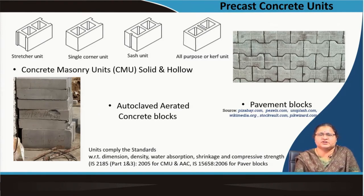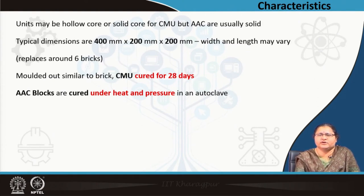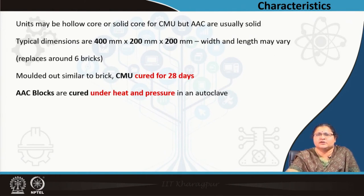Other than hollow blocks, concrete masonry units come as solid blocks also, used for load-bearing structures. The typical dimension is 400 mm × 200 mm × 200 mm, replacing almost 6 bricks. You can also have 600 mm in length, or 75 to 100 mm thick units for internal partition walls. These are all molded out and the dimensions can be changed when ordering by using appropriate molds.